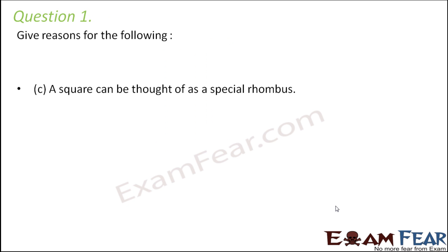Question number one: give reasons for the following. A square can be thought of as a special rhombus. So can you think of a square as a special rhombus? Yes, we can, because a square satisfies all the criteria of a rhombus. That is, all sides are equal.